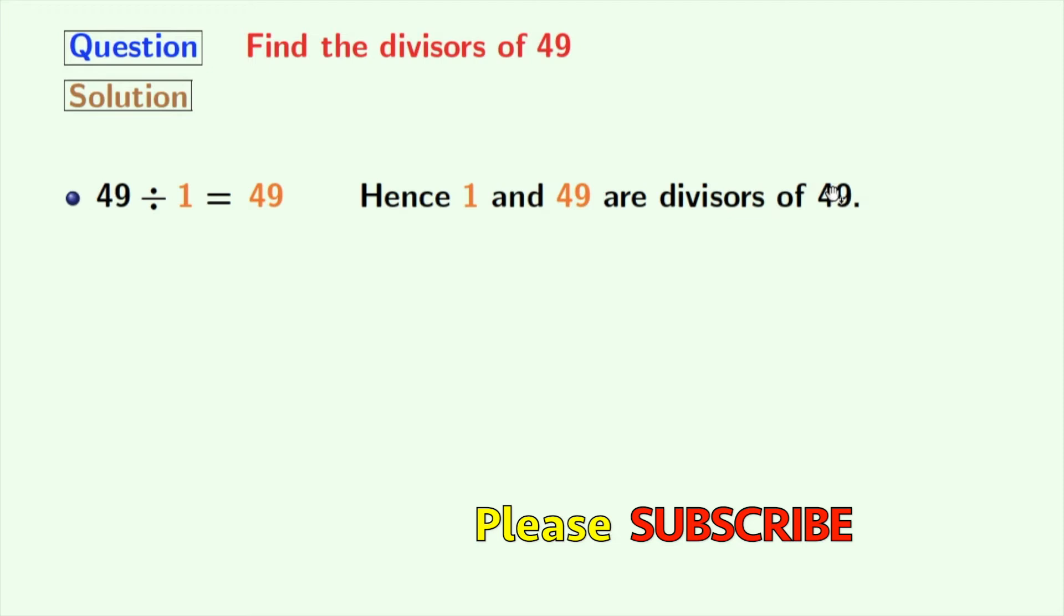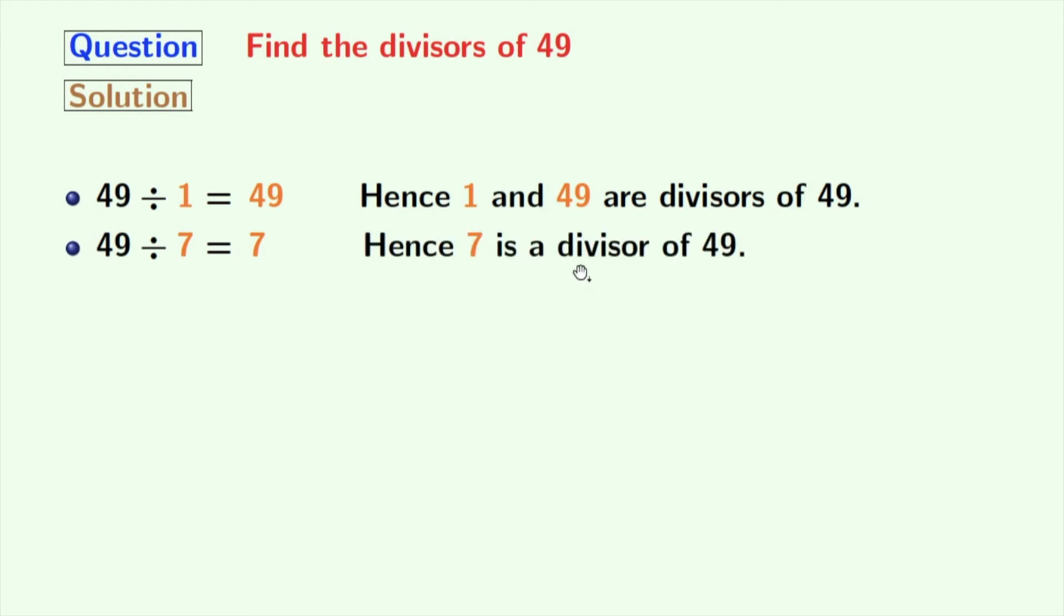The next number which can divide 49 is 7. See that 49 divided by 7 is 7, so 7 is a divisor of 49. Now look, there is no other number which can divide 49, so we will stop right now.